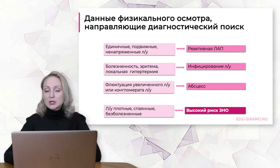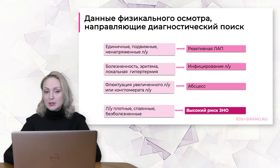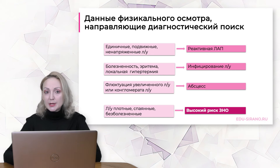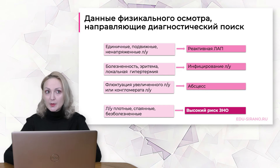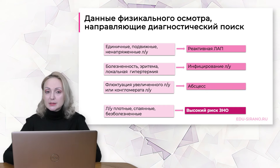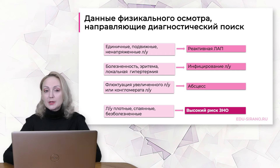Если у пациента с увеличением лимфатических узлов узел болезненный, в проекции лимфатического узла отмечается локальная гипертермия и локальная гиперемия – скорее всего это инфицирование лимфатического узла, и после проведения ультразвука необходимо будет назначить антибиотики. Если в лимфатическом узле помимо вышеперечисленного есть флюктуация – это наблюдается у четверти пациентов с лимфаденитами – скорее всего абсцесс, и данного пациента необходимо проконсультировать с хирургом.